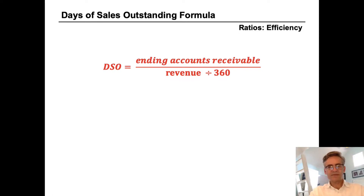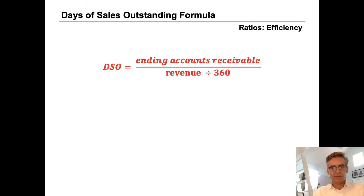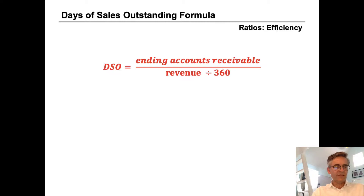Now we're going to talk about Days of Sales Outstanding. Days of Sales Outstanding, or DSO, as you see it abbreviated here, is an efficiency ratio and the formula for it is the ending accounts receivable divided by average daily revenue, or revenue divided by 360 in the denominator.